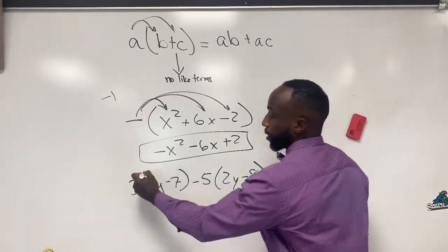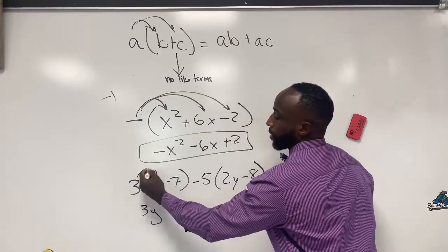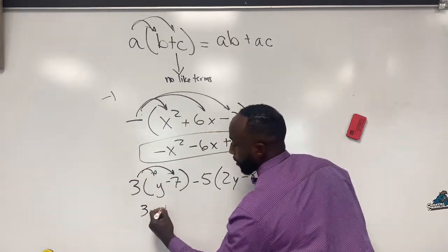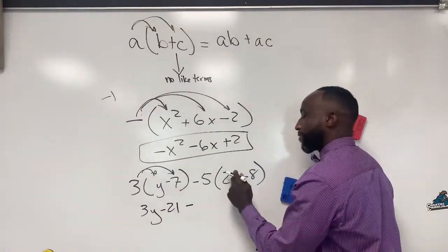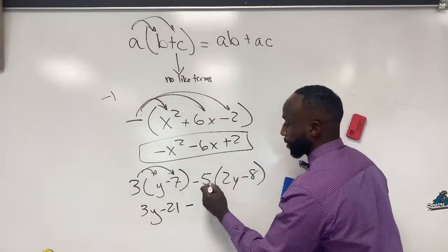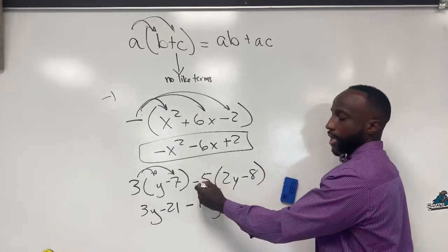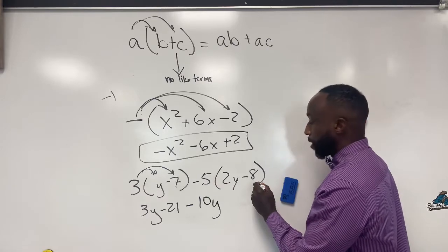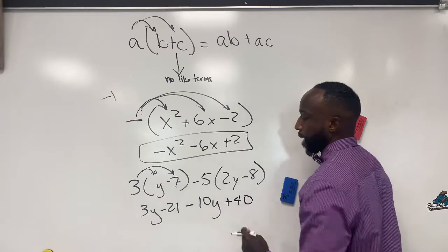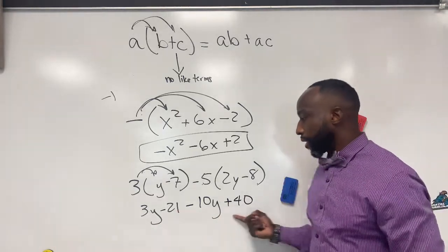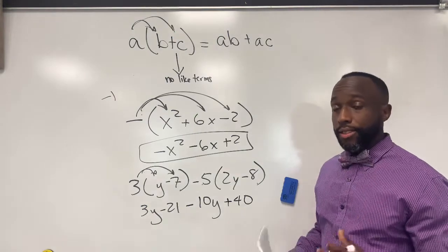Let's do it. So three times y is three y, three times negative seven is negative twenty-one, minus five times two y gives you negative ten y, and then negative five times negative eight gives you positive forty. Now from here, we can look and say, oh, we got like terms here, so we're not quite done yet. So let's combine our like terms.